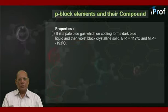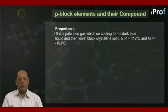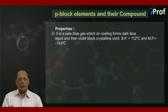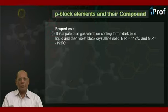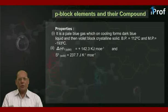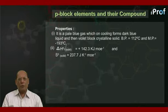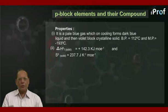Properties of ozone: Number 1, it is a pale blue gas which on cooling forms a dark blue liquid and then a violet-black crystalline solid. Its boiling point is −112°C and melting point is −193°C. Number 2, ΔH°f for the solid is +142.3 kJ per mole, and standard entropy S° is 237.7 J K⁻¹ mol⁻¹.